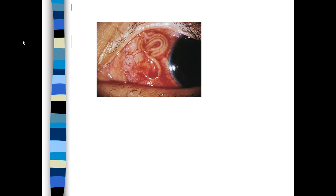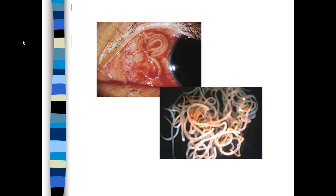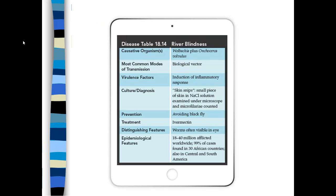This image shows what the helminth looks like when it infects the eye. The black flies bite the skin — not the eye — and then the worms migrate to the eye. This is a biological vector carried by black flies, with Wolbachia as the active damaging agent. Diagnosis is done visually by finding the helminths. Treatment is the anti-helminthic drug ivermectin. There are many many cases due to the prevalence of black flies in sub-Saharan Africa and Central and South America.